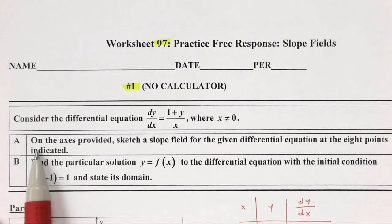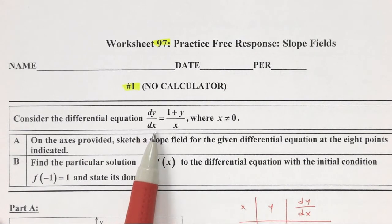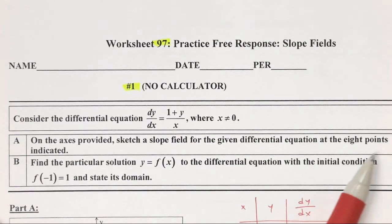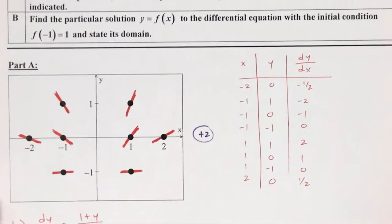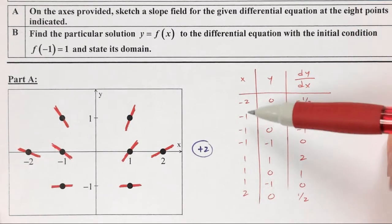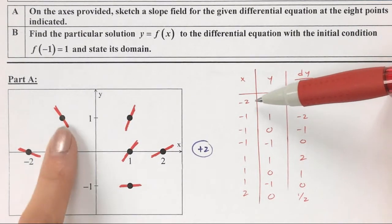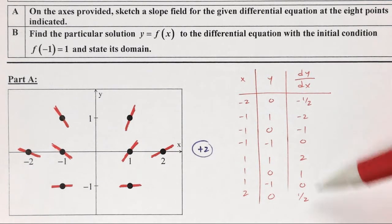So the first part is, on the axis provided, sketch a slope field for the given differential equation, they give you a y prime, and then here's your function for it, and they want you to find those eight points of the slope field, so you're drawing on those eight points. So what I did right here, those eight points I listed out, so negative 2,0, negative 1,1, negative 1,0, negative 1, negative 1. So if you don't list every single point out, it's okay, but you do want to list most of them, and you want to make sure that your slope field has some sort of pattern that makes sense.